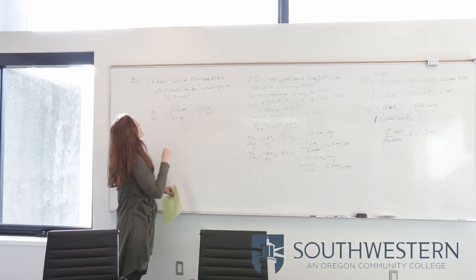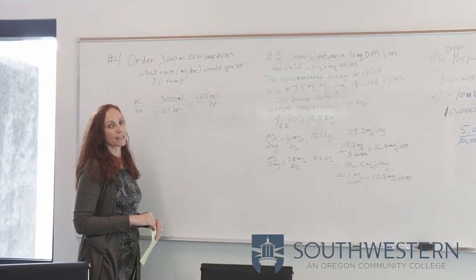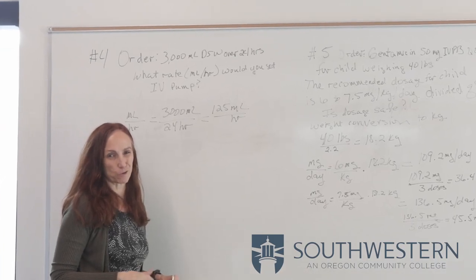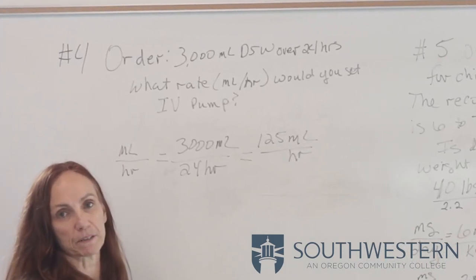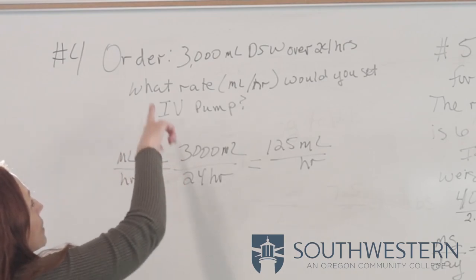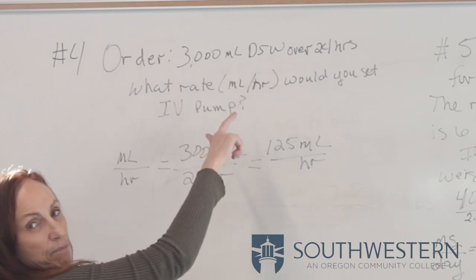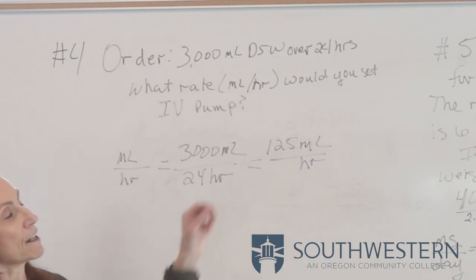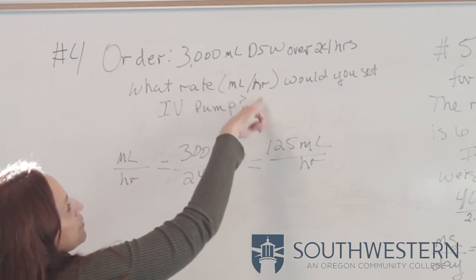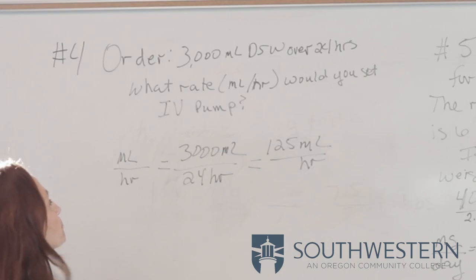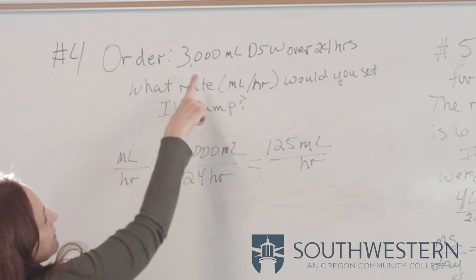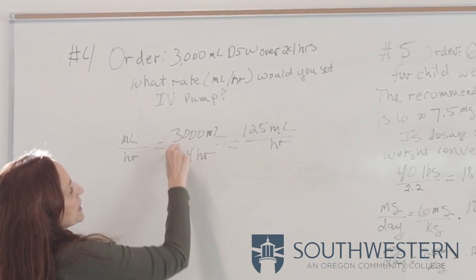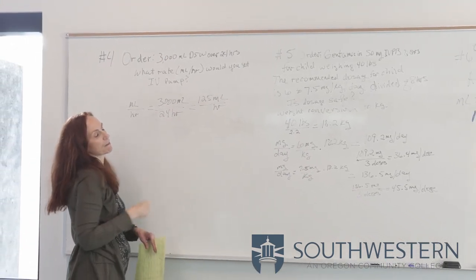The next problem is an IV rate. We only calculate IV rates in milliliters per hour — what you would set the pump to. We don't test drops per minute. The order is 3,000 milliliters of D5W over 24 hours. Milliliters per hour equals 3,000 milliliters over 24 hours. Divide 24 into 3,000 to get 125 milliliters per hour.